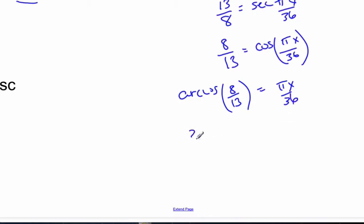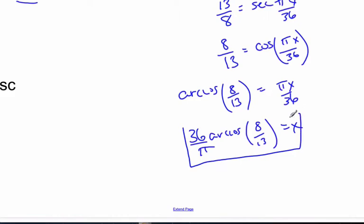I'm going to multiply by 36 over pi arc cosine 8 over 13, and that equals x. This is my x value.